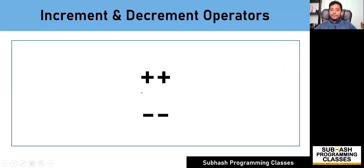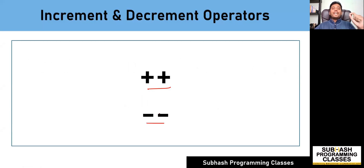Let's get started. The symbol ++ is used to represent the increment operator and the symbol -- is used to represent the decrement operator. Increment operator is used to increment the value of a variable by one, and decrement operator is used to decrement the value of a variable by one.